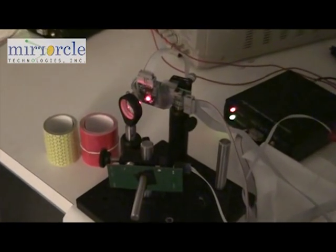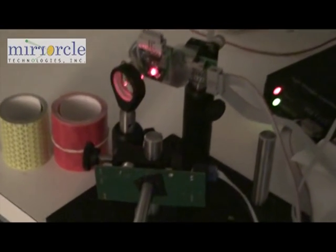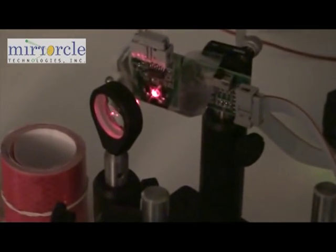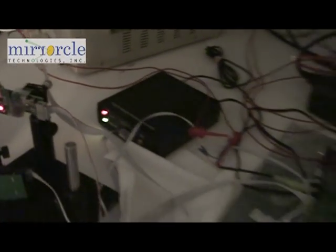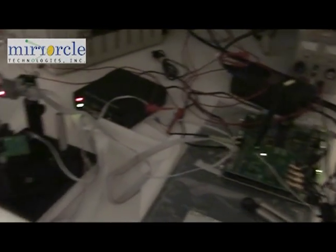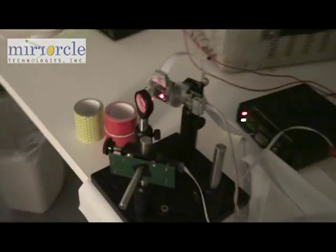What we have here is a MEMS device that's scanning a laser beam from this laser diode through an optical lens. It's being driven by a high voltage amplifier and controlled by an FPGA board in this example of 3D tracking.